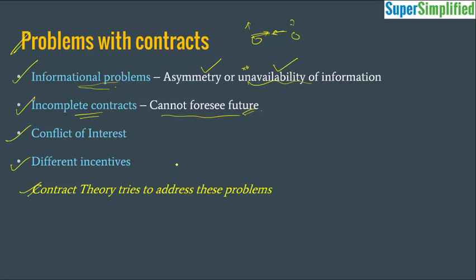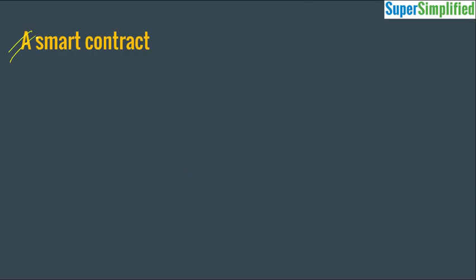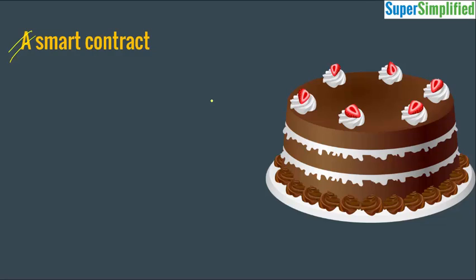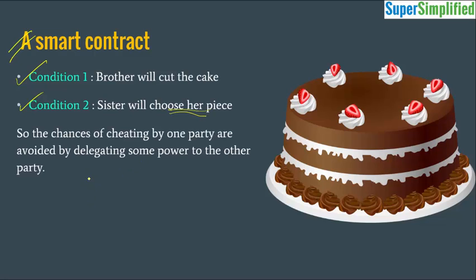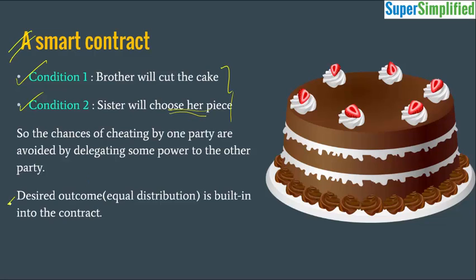Contract theory tries to address these problems. The objective is to help economic agents design better contracts that bring more efficiency to the market economy. To understand a smart contract, consider this example: a mother has to go out but knows her two kids will fight over a cake in the refrigerator. She designs a contract with two conditions — the brother will cut the cake, and the sister will choose her piece. The brother will lose if he cuts two unequal pieces because the sister can select the larger piece. So the desired outcome — equal distribution — is built into the contract. That is how a smart contract works: it binds two transacting parties to follow a certain path in the case of a conflict of interest.